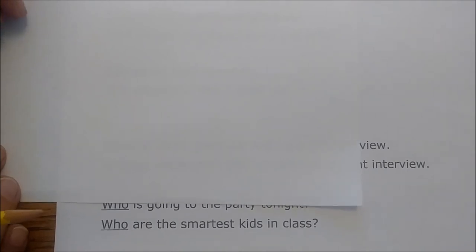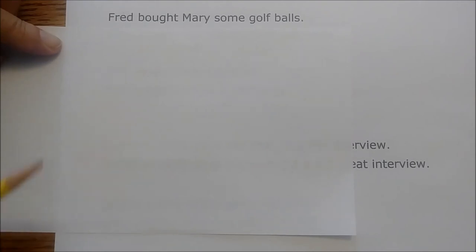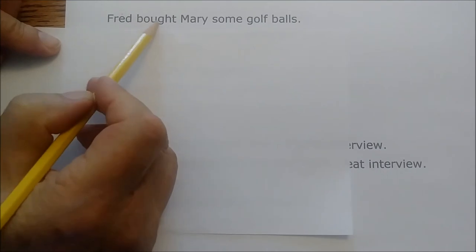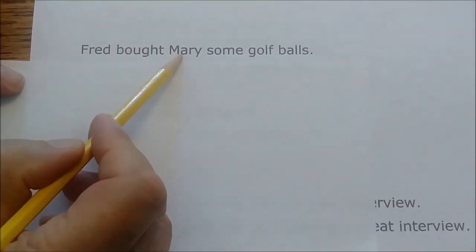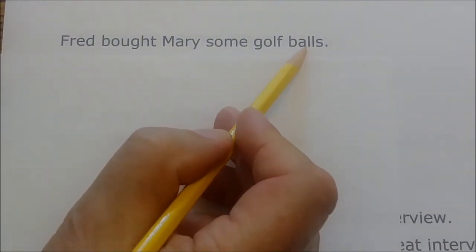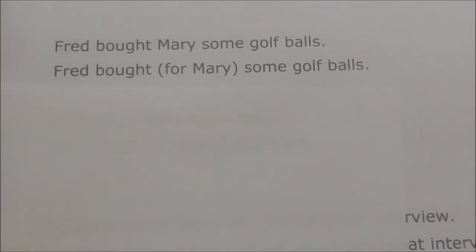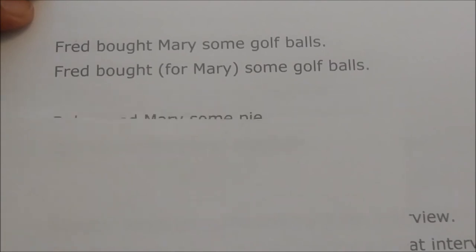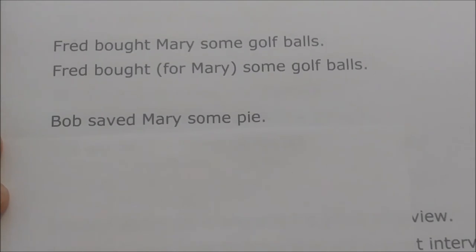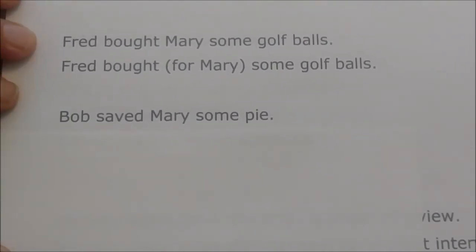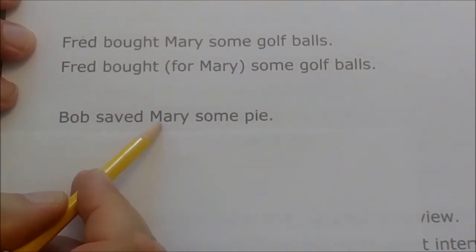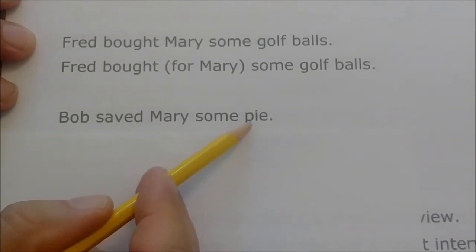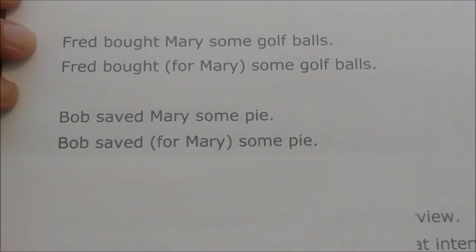'Bob saved Mary some pie' — maybe they were at a party and Bob saved some pie for her. The direct object is pie, and Mary is the hidden object of the preposition 'for': 'Bob saved for Mary some pie.' We just don't say the word 'for,' but it's there.